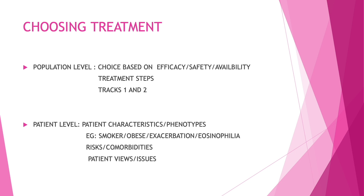When we talk about the patient level, the patient's own characteristics, phenotypes, and modifiable factors—traits like being a smoker, being obese, or having an eosinophilic profile—may change the way we manage the patient. The risks and comorbidities will alter overall treatment, and various patient views and issues are also important when deciding about treatment.